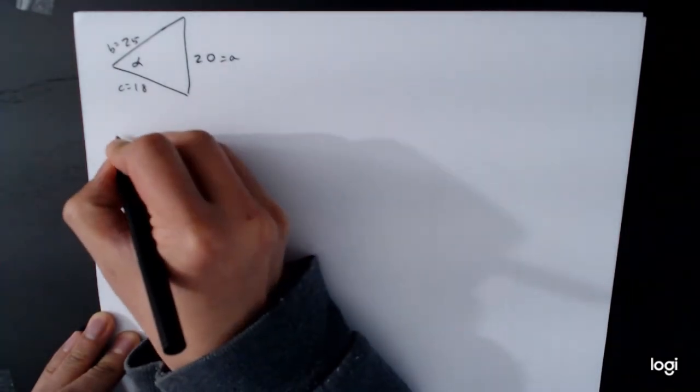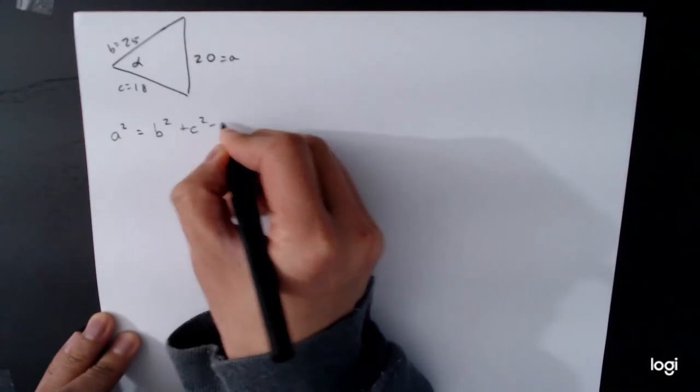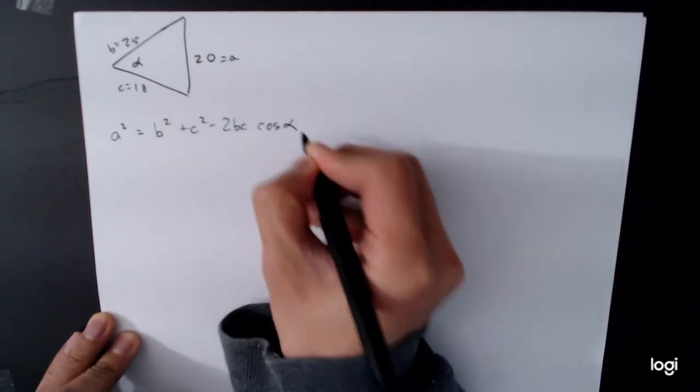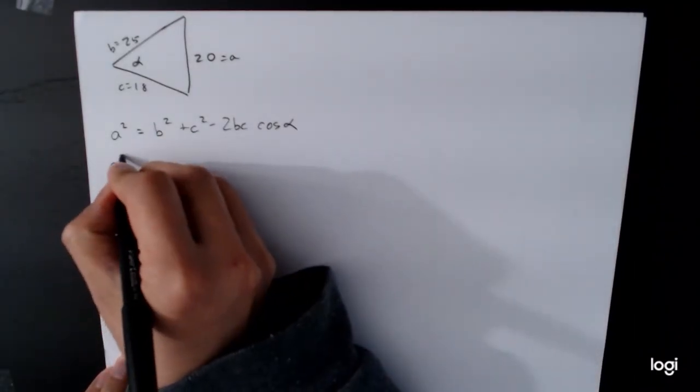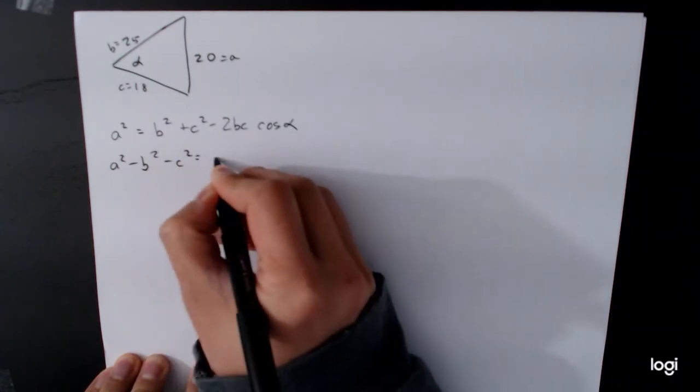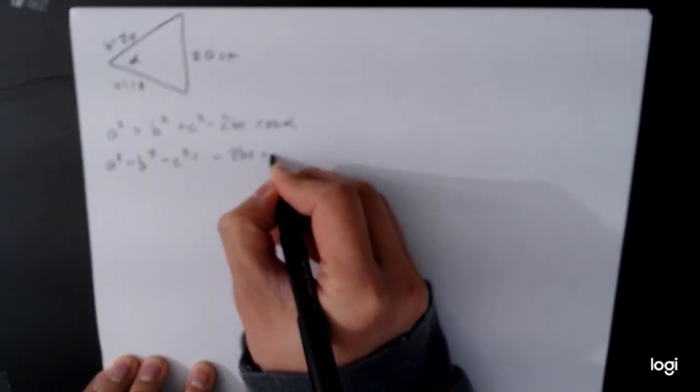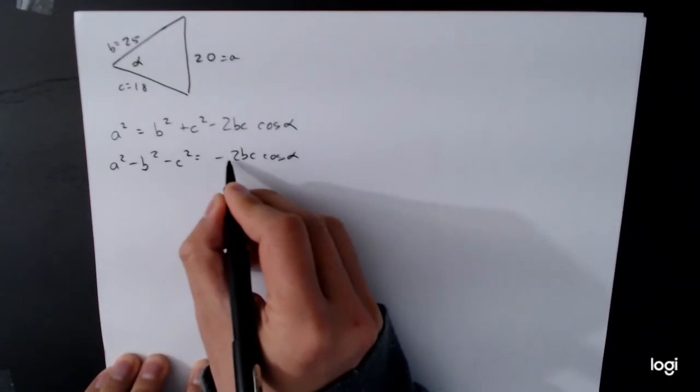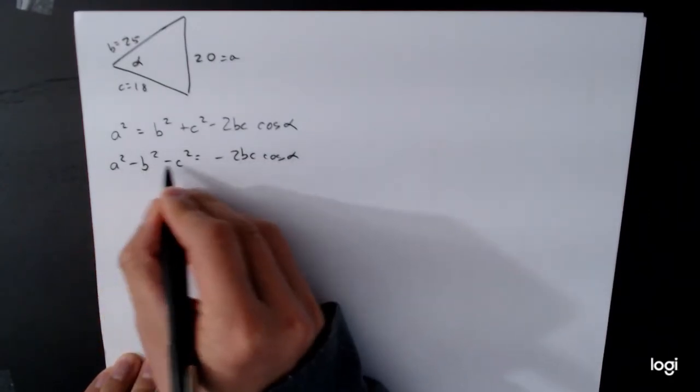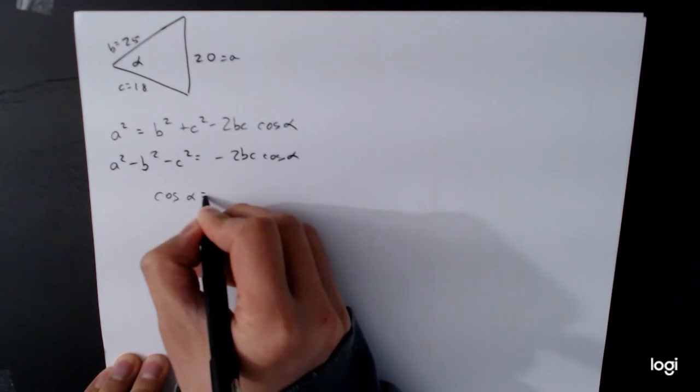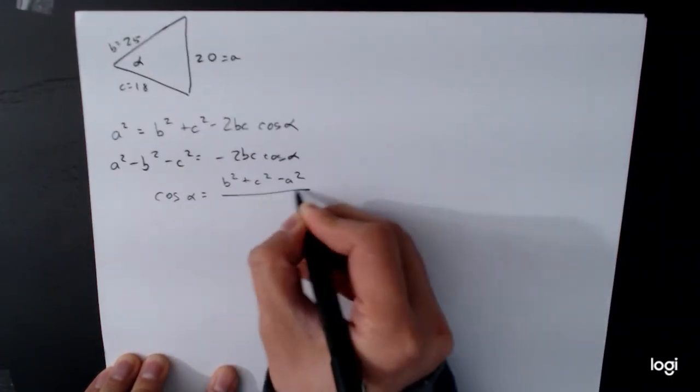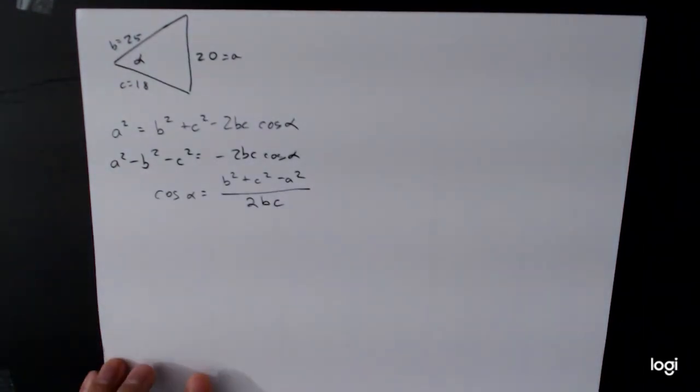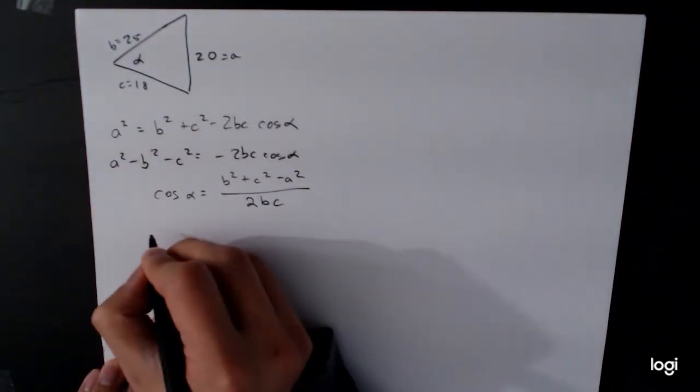And so we have A squared equals B squared plus C squared minus 2BC cosine alpha. So we can solve for the cosine alpha. I'll work out the details again. A squared minus B squared minus C squared is equal to negative 2BC cosine alpha. And then if we divide both sides by the negative 2BC, we're going to switch the signs on all these guys. So it'll be plus B squared plus C squared minus A squared, all divided by 2BC. And at this point, there's really nothing left to do but just plug in the values.